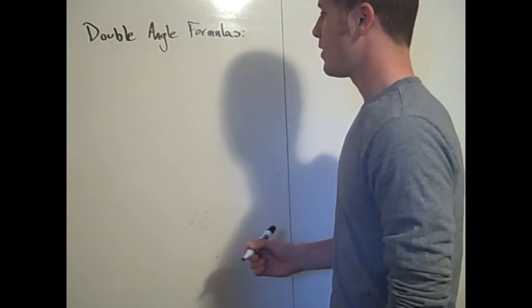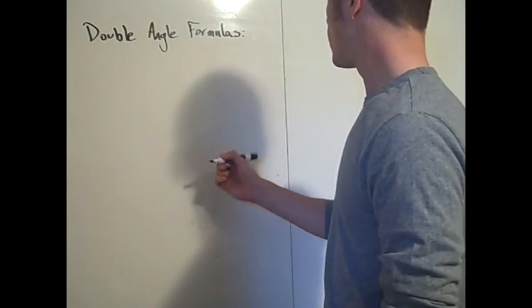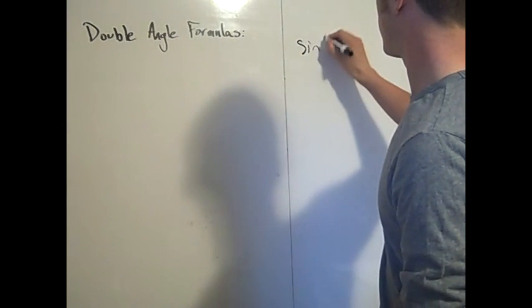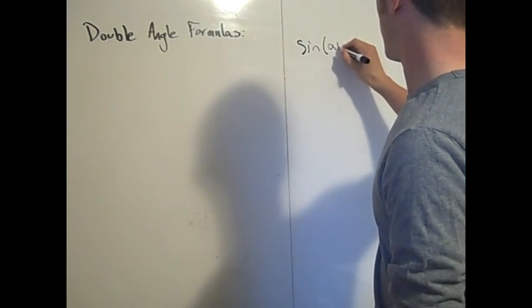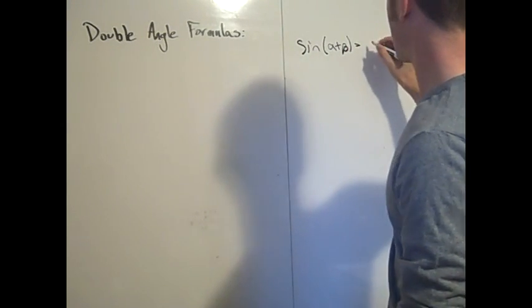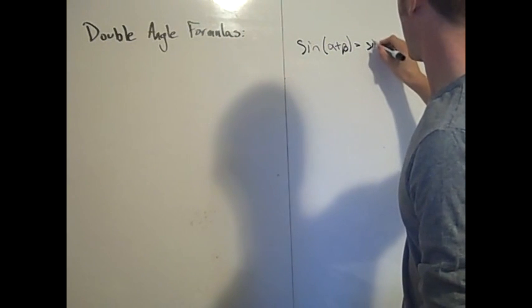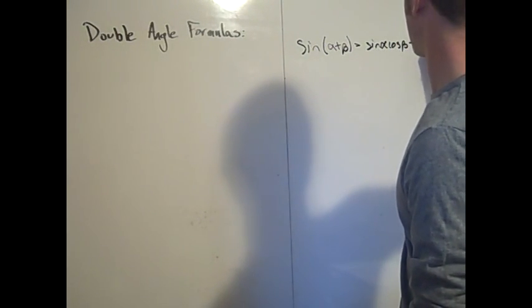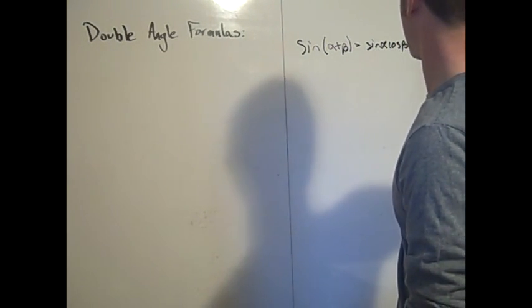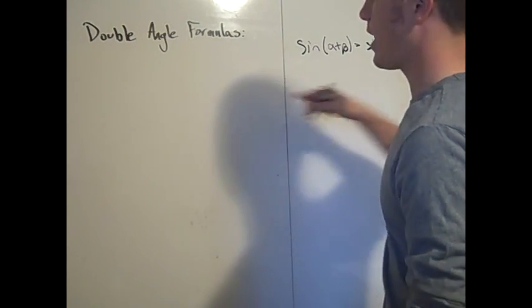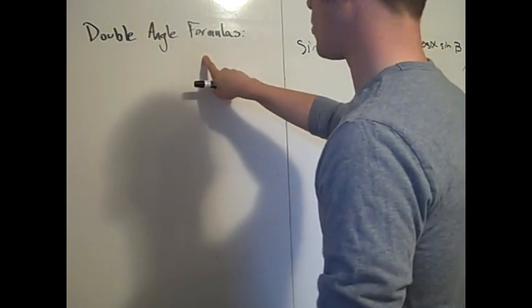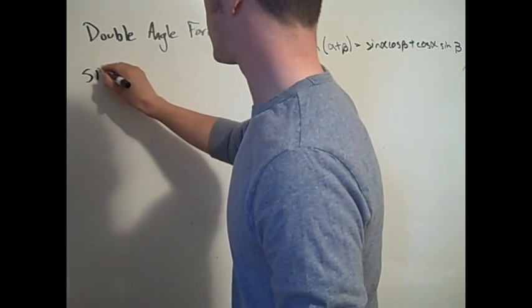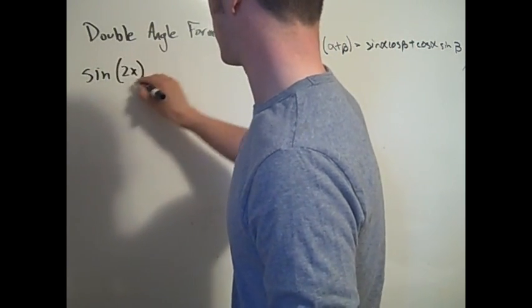We know from a previous video that the sine of alpha plus beta is sine alpha cosine beta plus cosine alpha sine beta. We're going to use that to our advantage in the double angle formula. So if you're asked to find the sine of 2x,